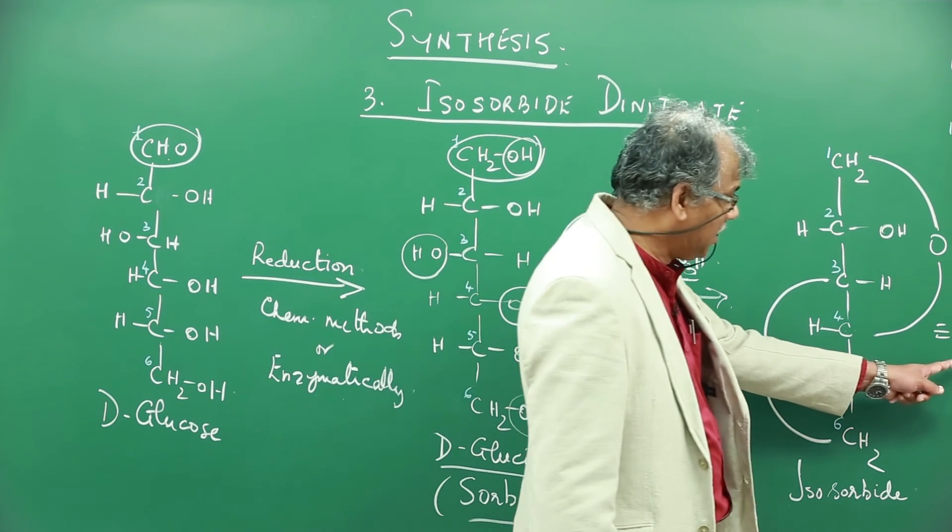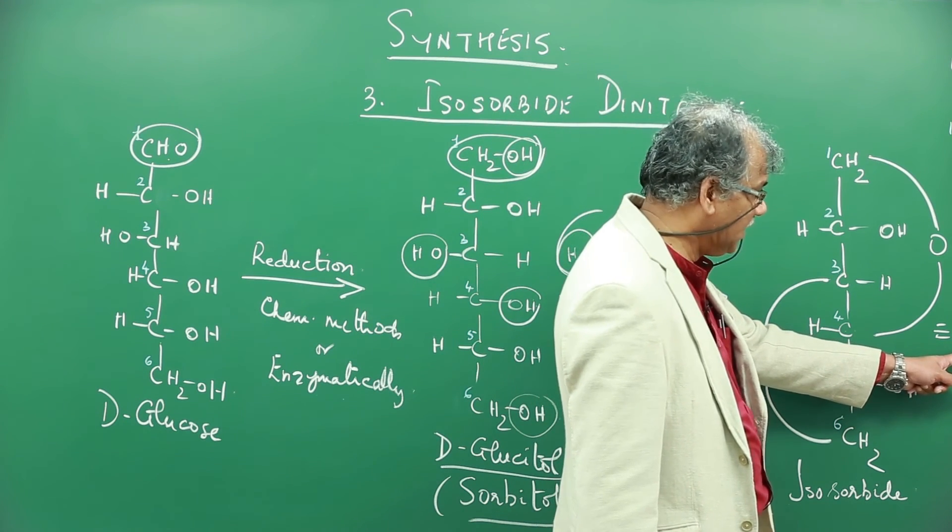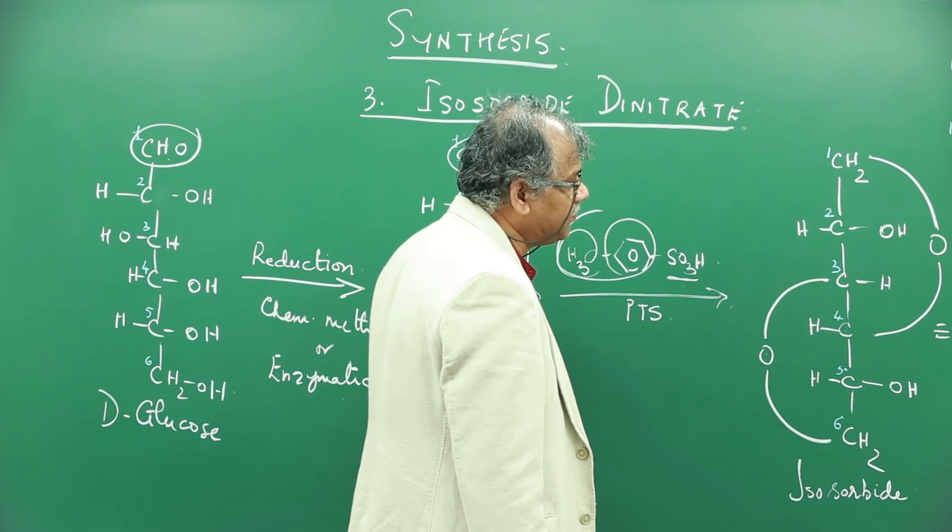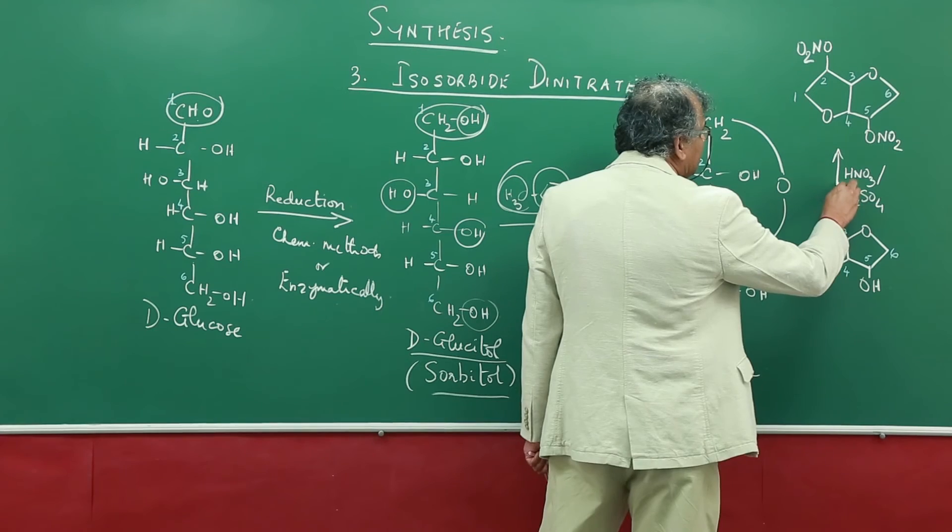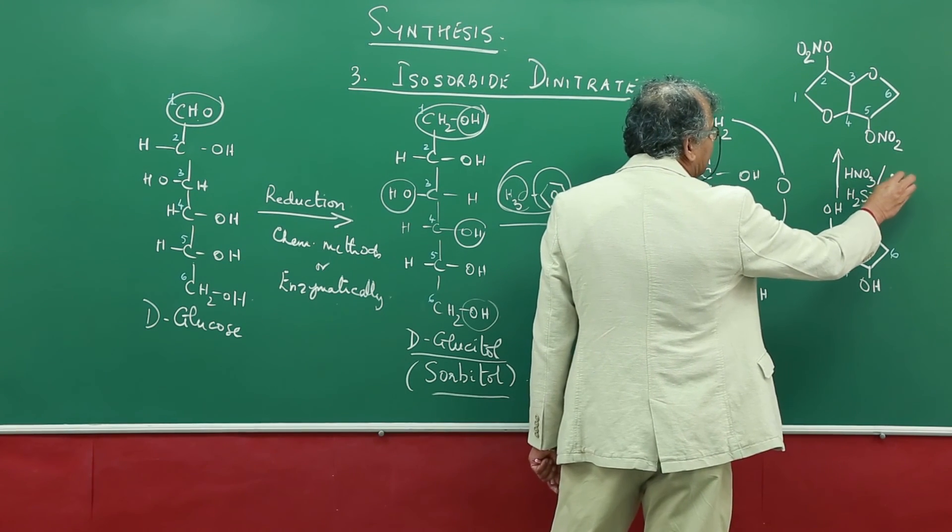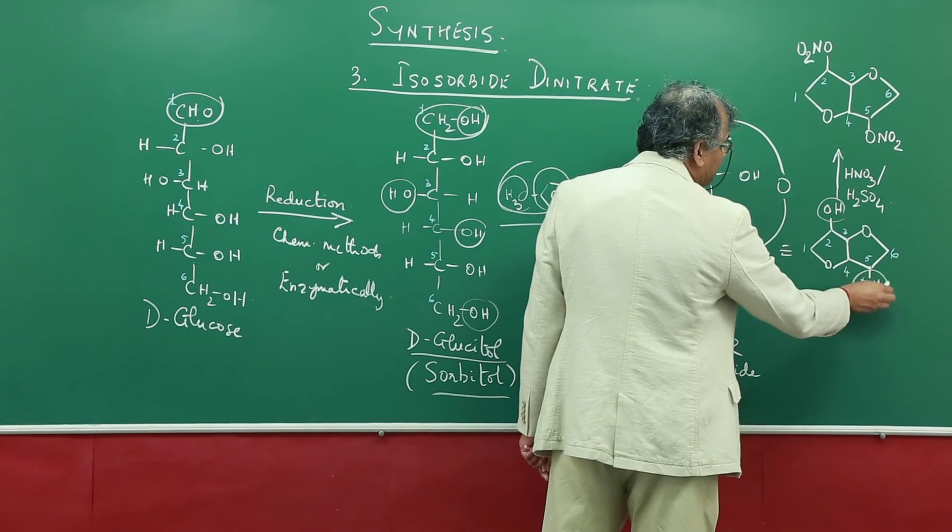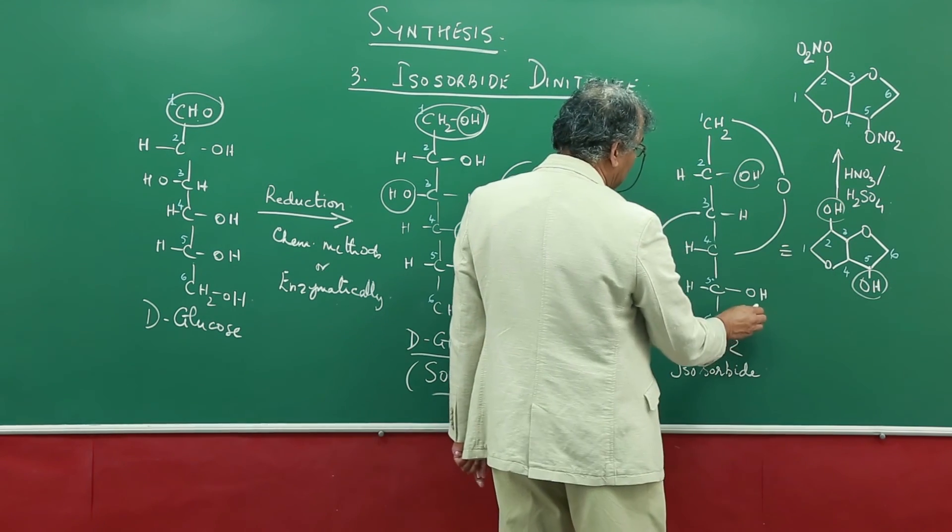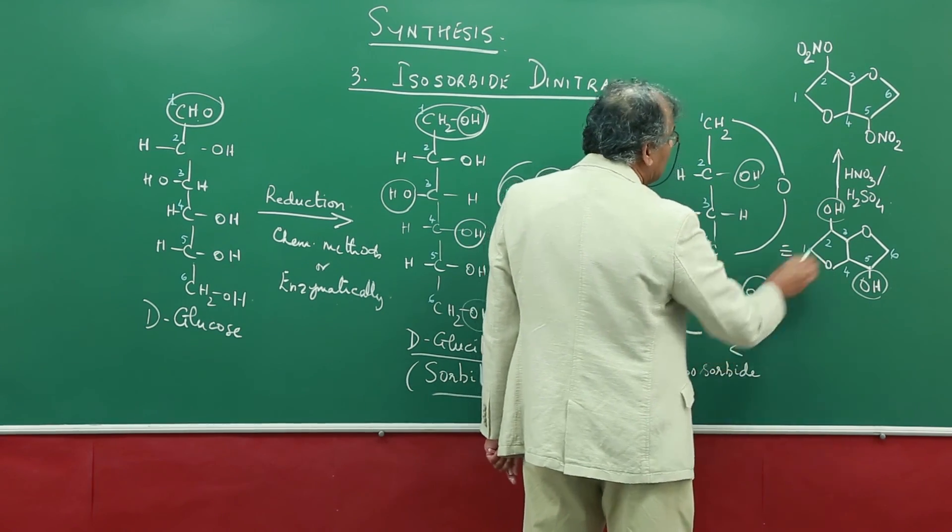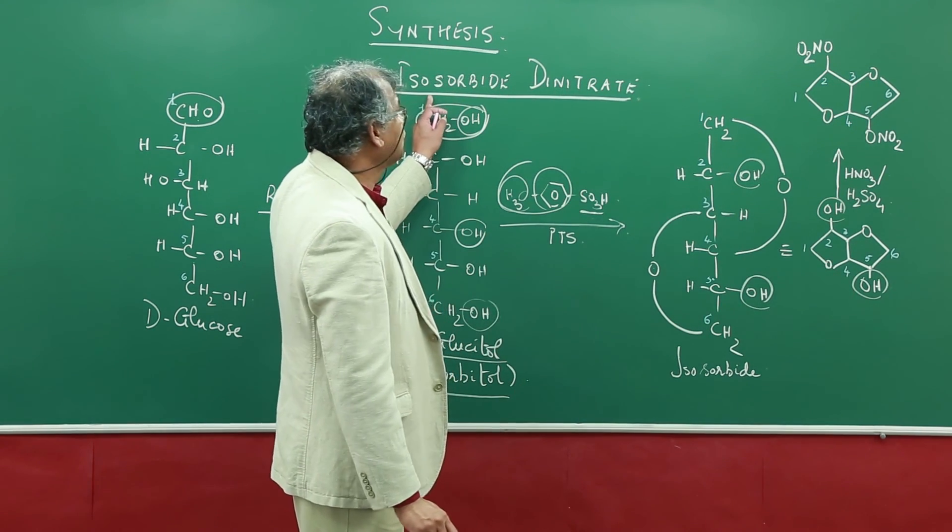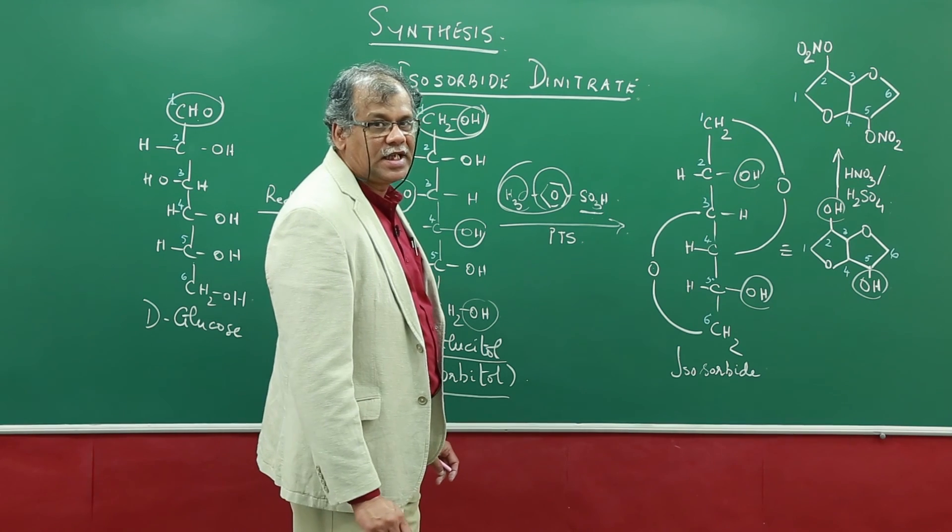The equivalent way of writing it in this ring structure is as shown here. The last step is nitration with a mixture of nitric acid and sulfuric acid, and the two hydroxy groups at the two and the fifth position are nitrated to get you isosorbide dinitrate.